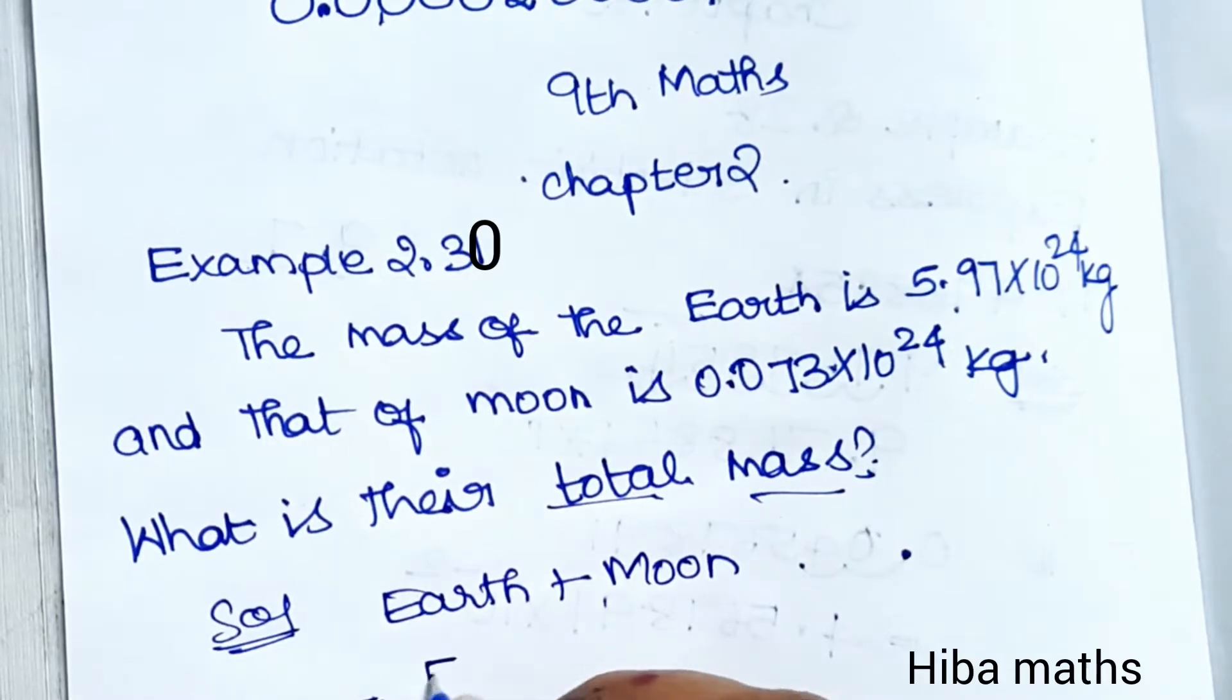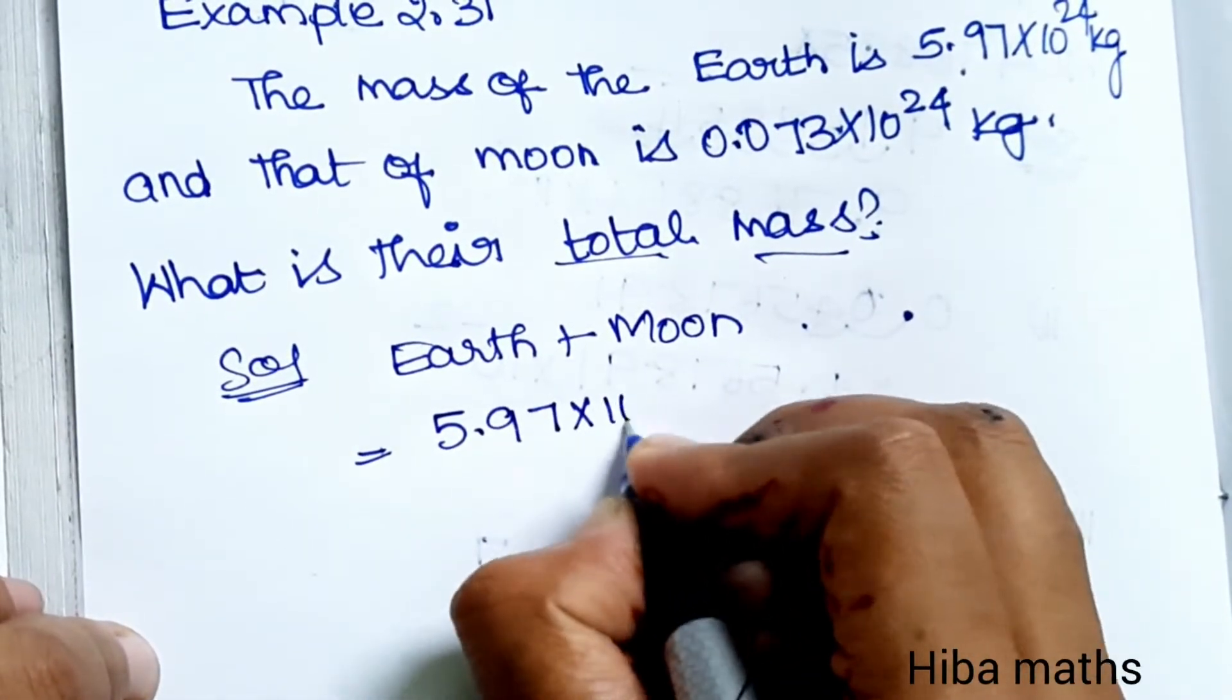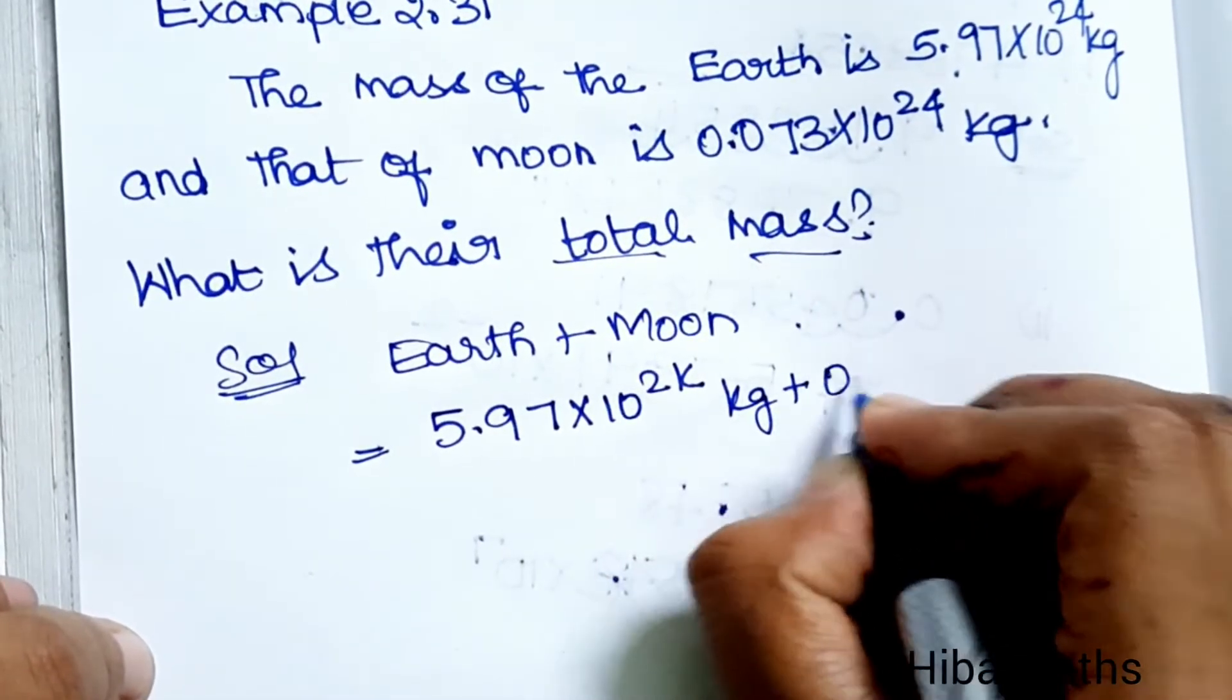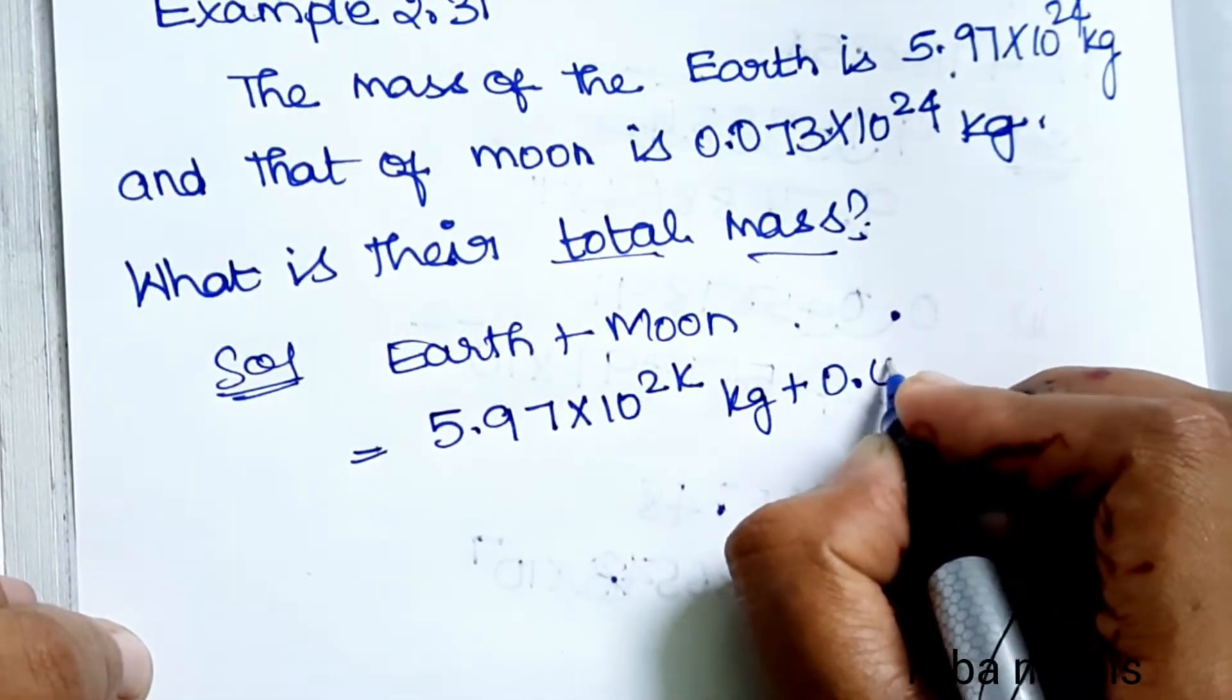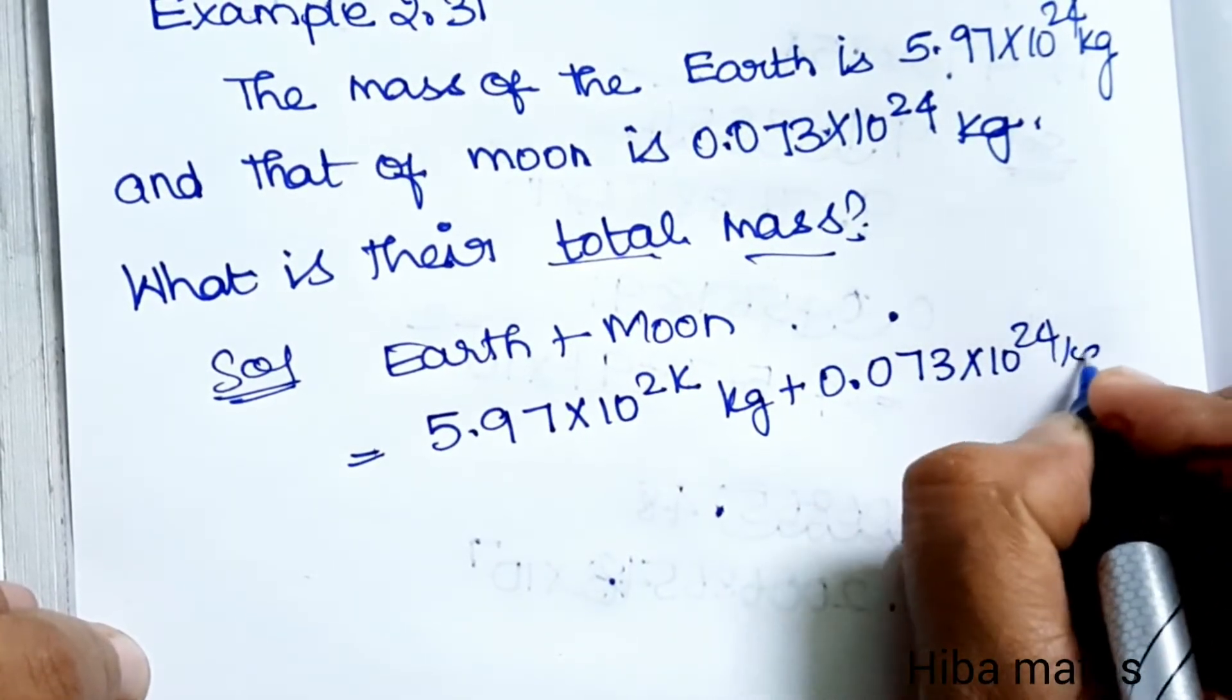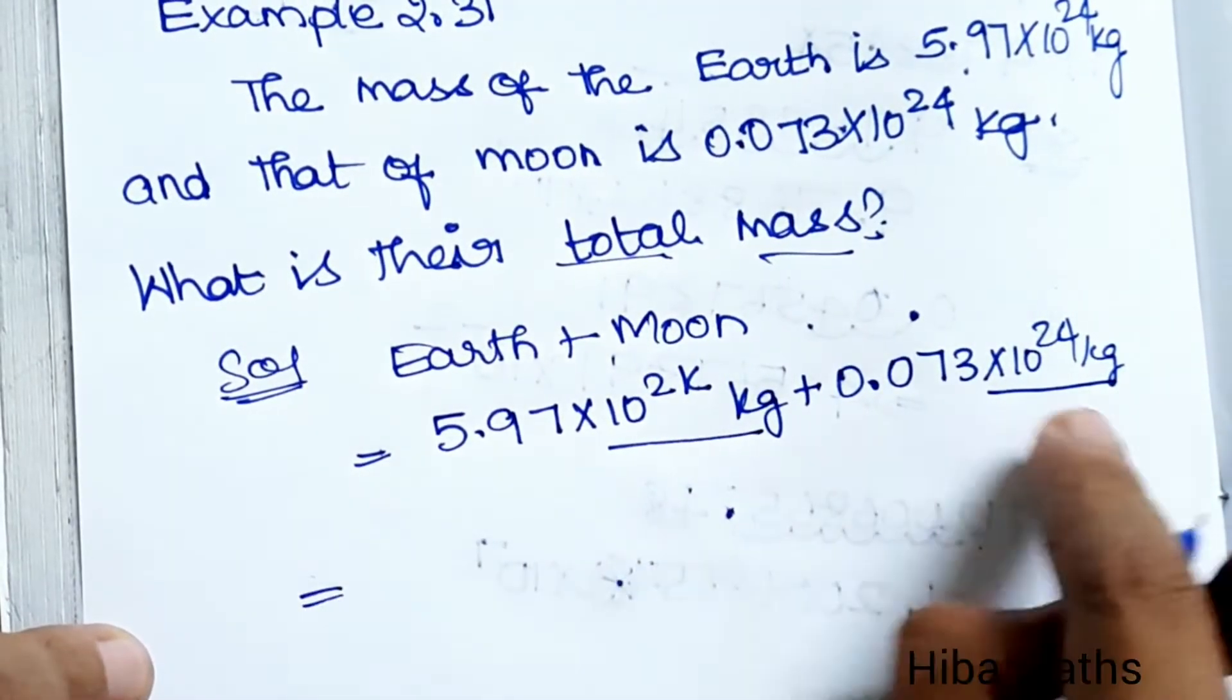So first we have 5.97 × 10^24 kg plus 0.073 × 10^24 kg. Now here is 10^24 kg, here is 10^24. So this is the common value.